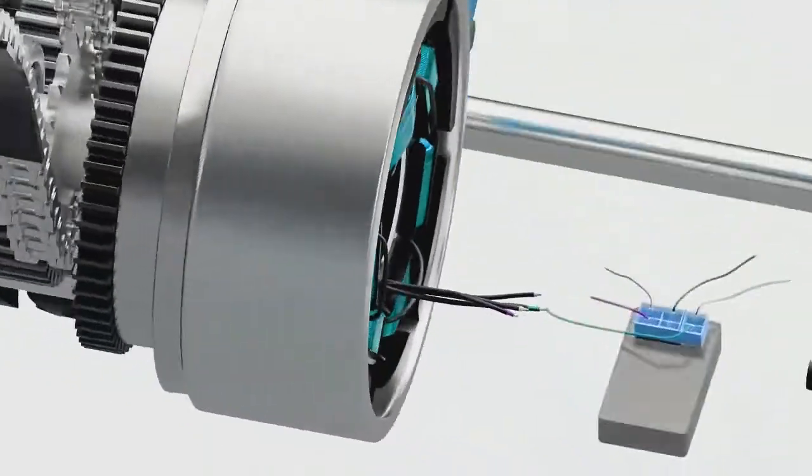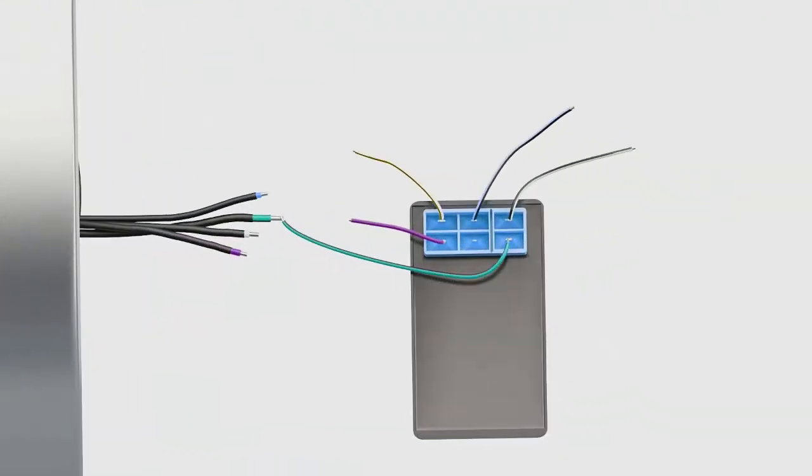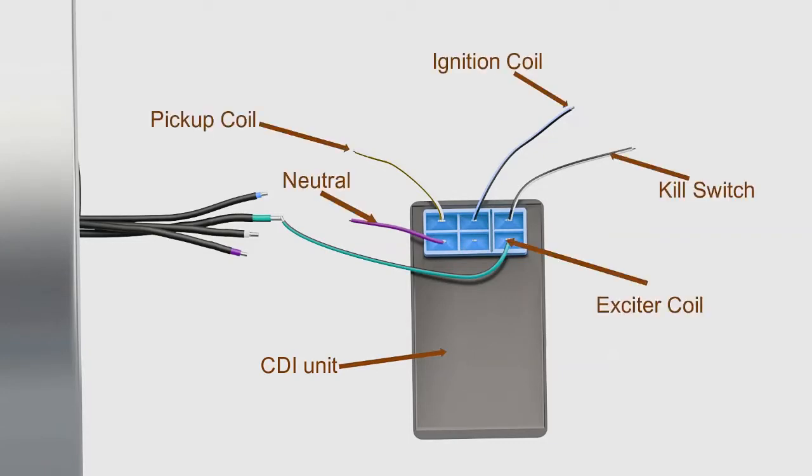This voltage is supplied to an electrical component known as the capacitive discharge ignition, or CDI unit. The connection for an AC-CDI is shown here. The primary function of the CDI unit is to store electric charge and dump the stored charge when required. A capacitor inside the CDI unit stores the electric charge.